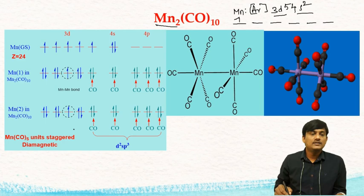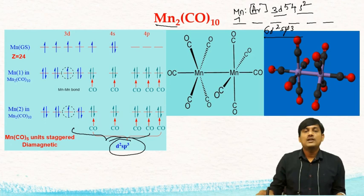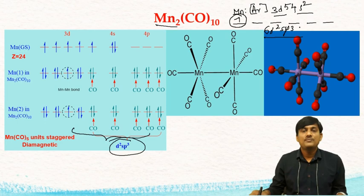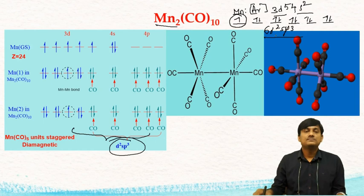These 6 orbitals participate in d²sp³ hybridization, giving 6 d²sp³ hybridized orbitals. Out of these 6, one has a single unpaired electron and the remaining 5 are empty. These 5 empty orbitals will be filled with electrons donated by the 5 CO ligands.